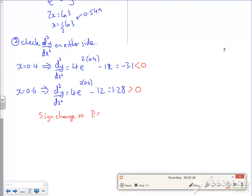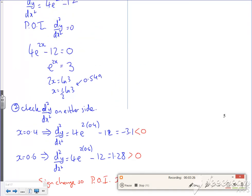So the point of inflection is definitely at x is a half ln 3. Now it wants the coordinates of that point, doesn't it?